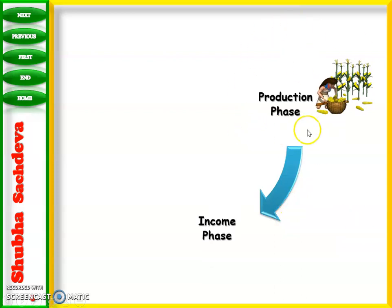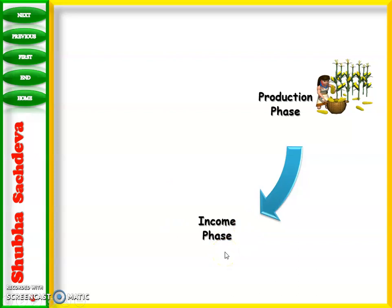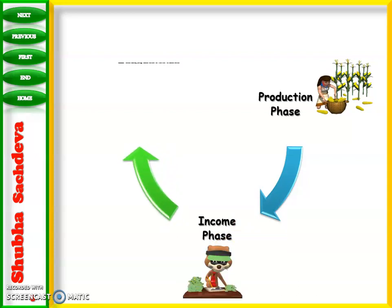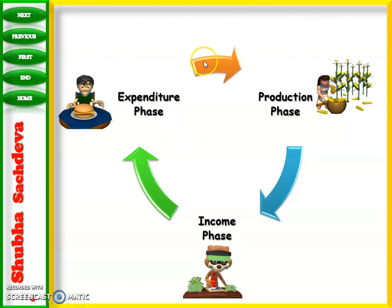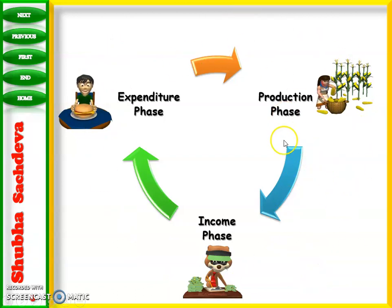When the factors of production are employed, they enter the production phase and receive income in return. After income comes expenditure, and after expenditure comes production again. So the circular flow of income continues: production phase, then income, then expenditure, then production, then income, then expenditure.